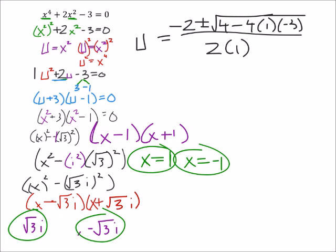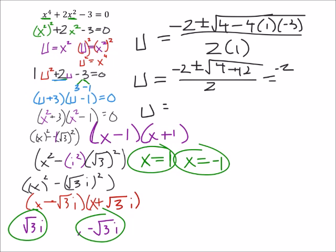This is what it looks like. I've replaced the b's, the a's, and the c. Just simplifying this thing, I'd get -2 ± √(4 - 4 × -3). So that's 4 + 12, and that's all over 2. So simplifying this further, it's really -2 ± √16 over 2. So that's -2 ± 4 all over 2.